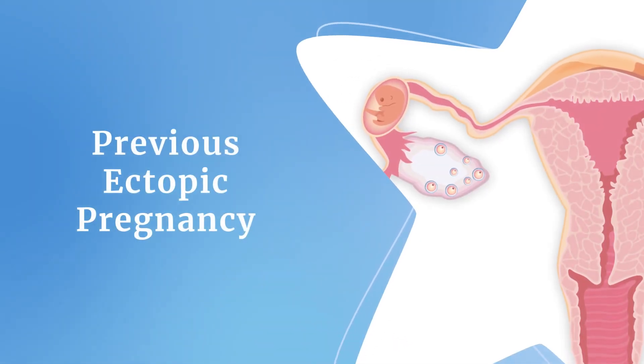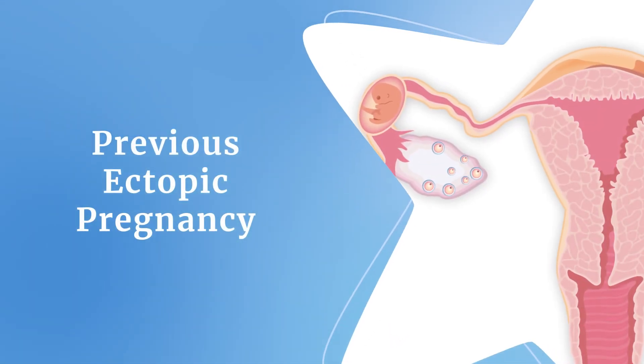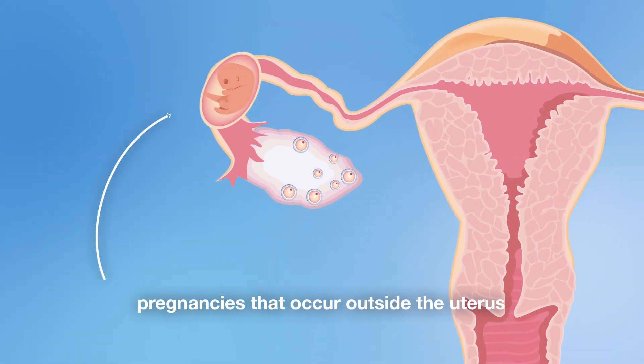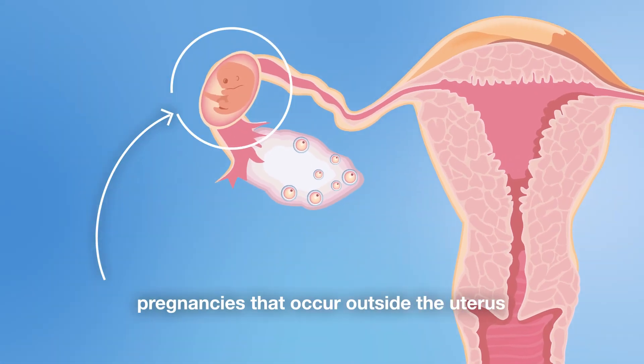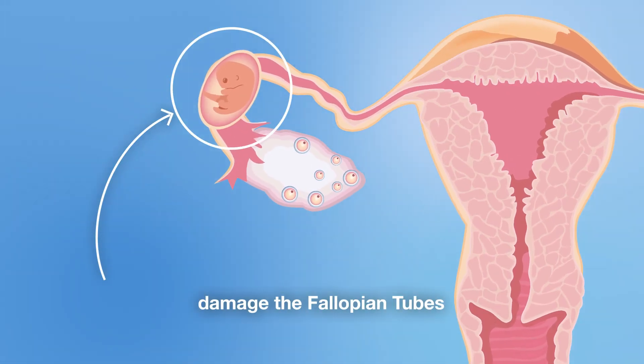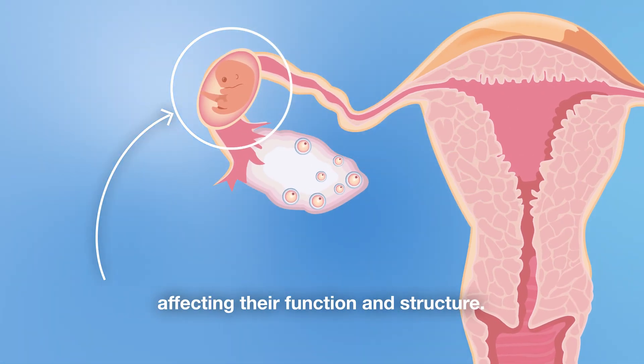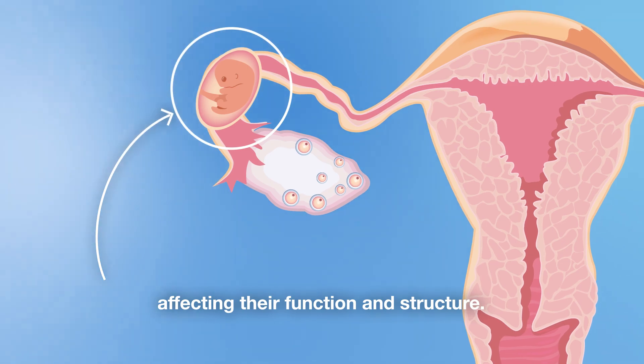Previous ectopic pregnancy: pregnancies that occur outside the uterus damage the fallopian tubes, affecting their function and structure.